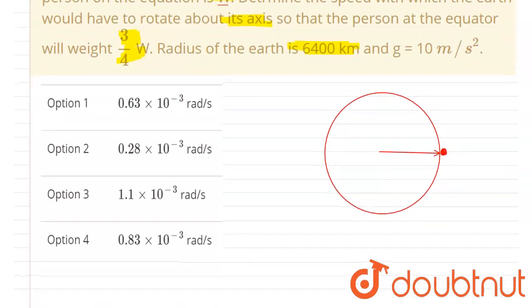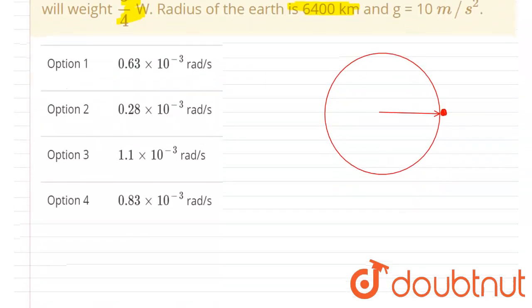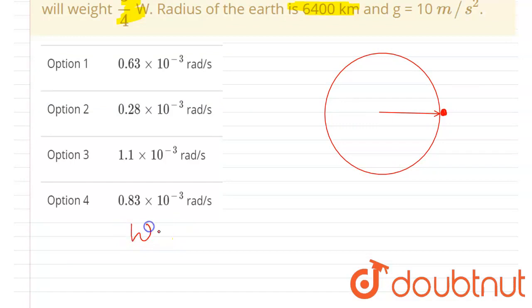W. Okay, so initially when the earth was at rest, W was equal to mg. Now the earth starts rotating about its axis. Then what will happen if you see from the frame of the earth?